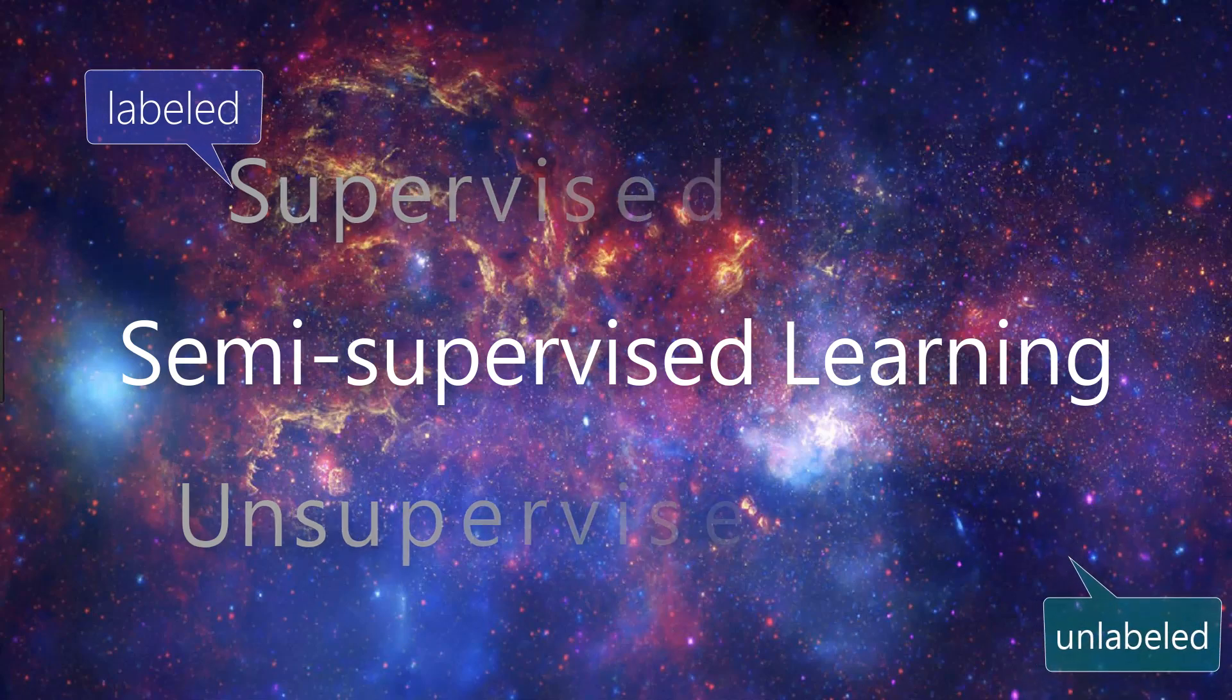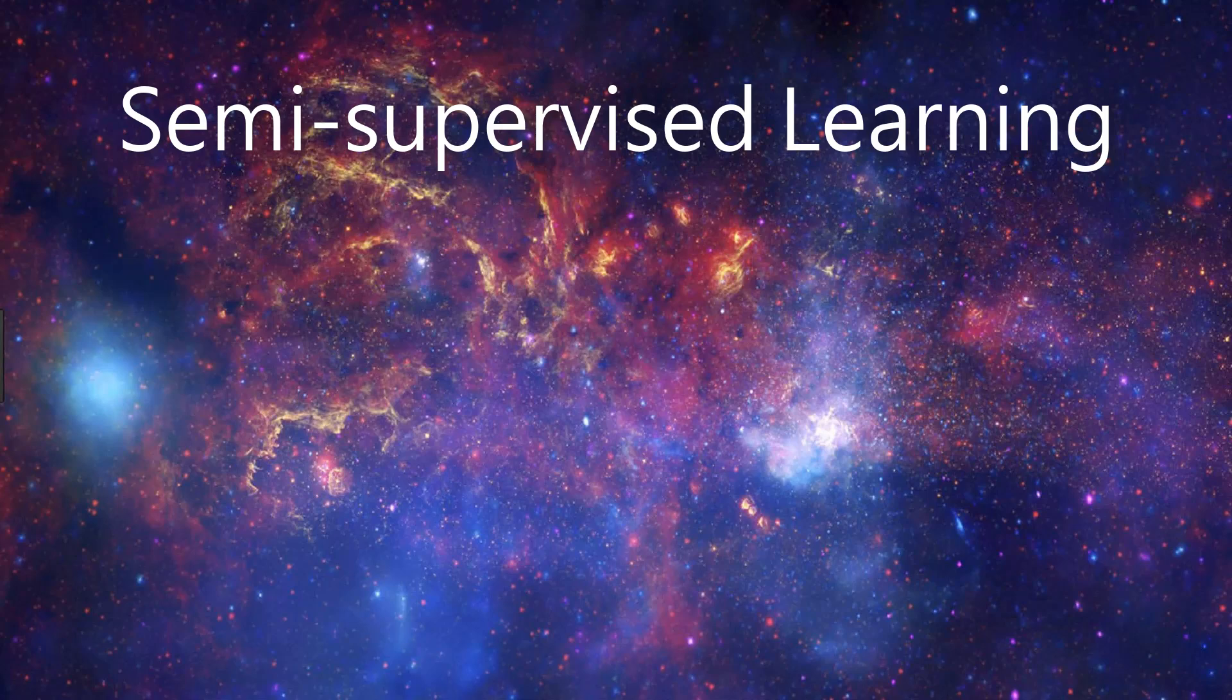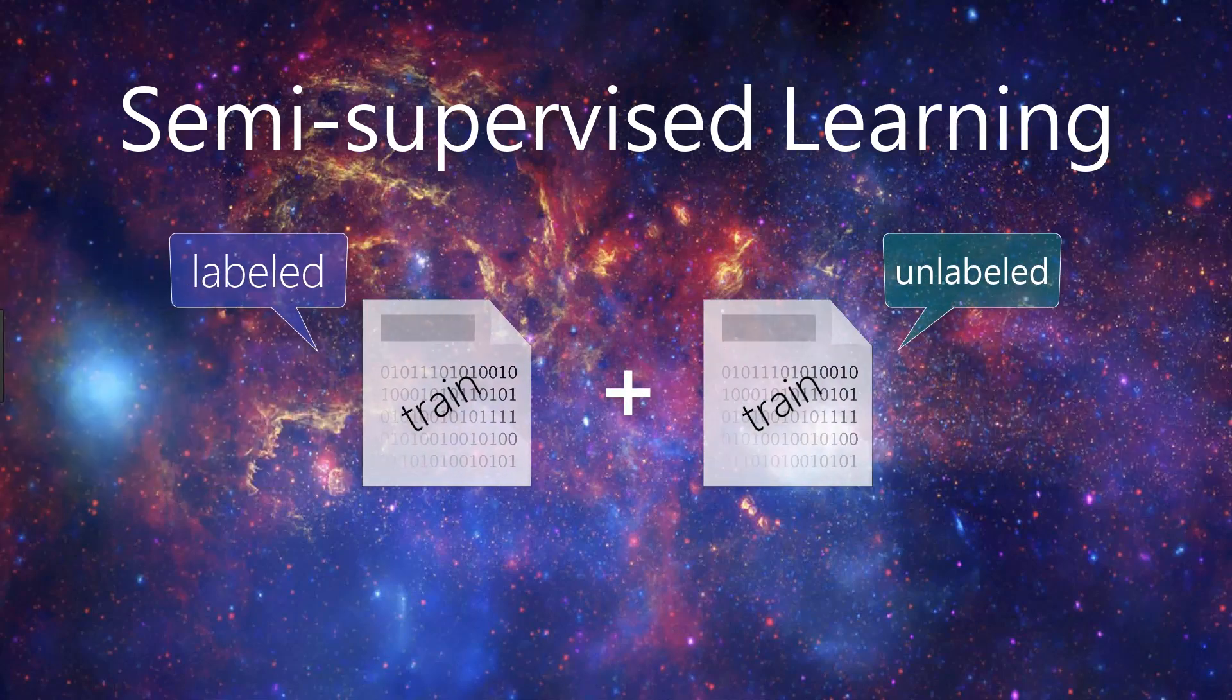So now onto semi-supervised learning. Semi-supervised learning uses a combination of supervised and unsupervised learning techniques. And that's because, in a scenario where we'd make use of semi-supervised learning, we'd have a combination of both labeled and unlabeled data.